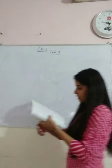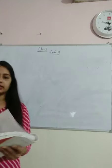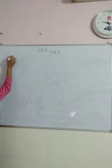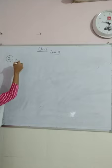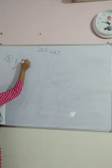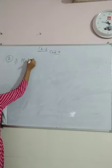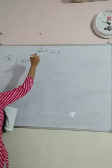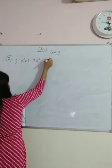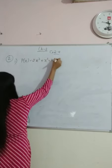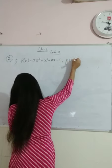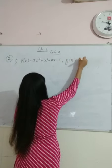यह बताना है कि G(x) है वो P(x) का factor है या नहीं है। इसका first part: P(x) = 2x³+x²-2x-1, और G(x) = x+1 है। G(x) का मतलब x+1 से divide करना है।